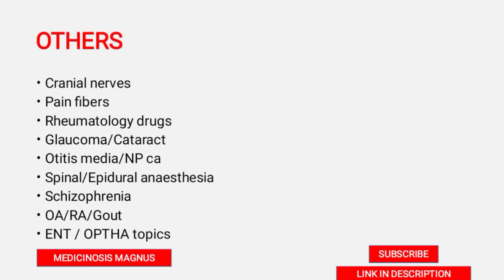Other important topics include cranial nerves — know what findings can be seen with each cranial nerve. They may give a case and ask you to localize which cranial nerve is involved, or ask about stroke syndromes involving specific cranial nerves. In physiology: pain fibers — A-delta fiber, B fiber, C fiber — those questions are very important. Know rheumatological drugs, DMARDs, and glaucoma and cataract questions, which are often seen in this exam. Also know otitis media, nasopharyngeal carcinoma, spinal and epidural anesthesia layers pierced, schizophrenia, osteoarthritis, rheumatoid arthritis, and gouty arthritis.